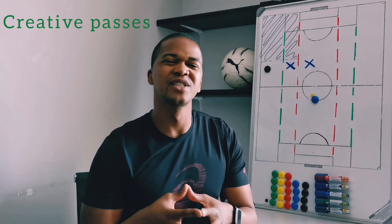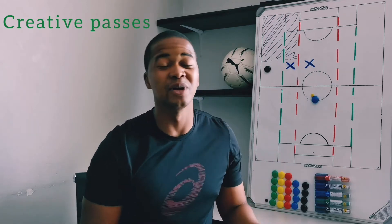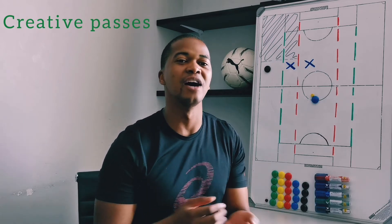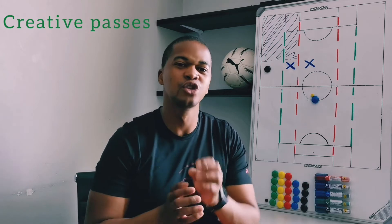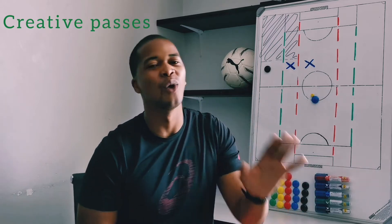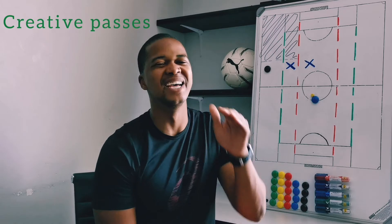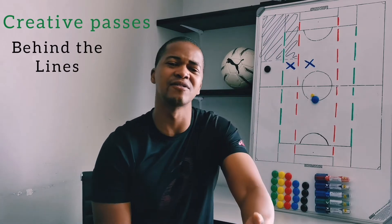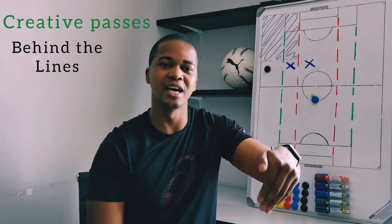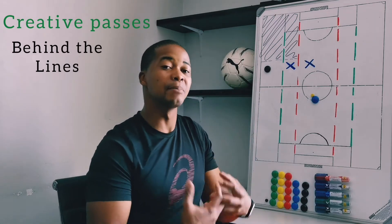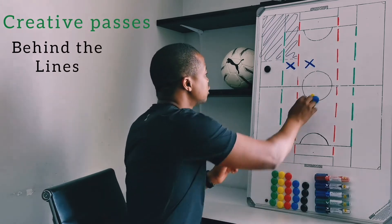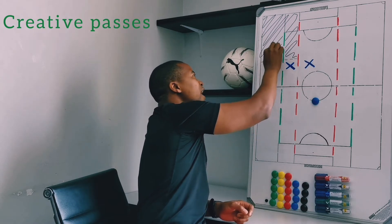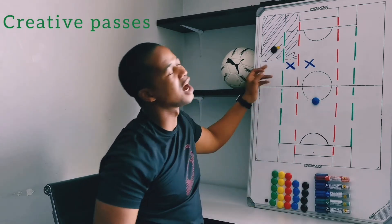We're not looking to do anything more complicated than just passing the ball right through to them. Now we move on to creative passes. As a central midfielder you need to be the most creative player on the field — you need fantastic ways to get the ball to your intended target. One of the nice simple creative passes is behind the defensive line: anything played behind the defensive line, whether on the floor or over the line, can be considered a creative pass. That's the ball played through to meet a man's run right over here behind the defenders.